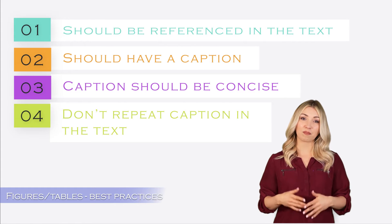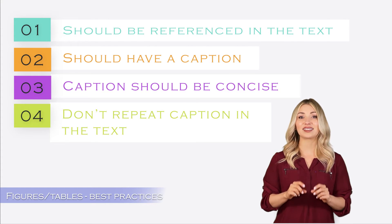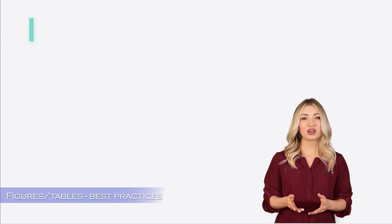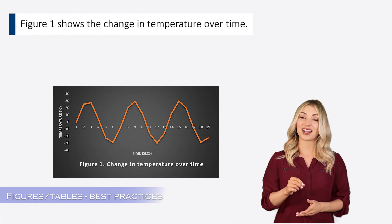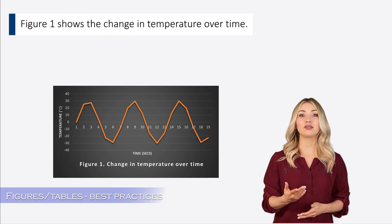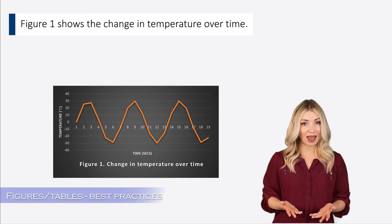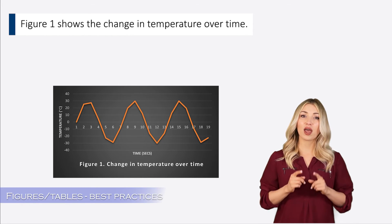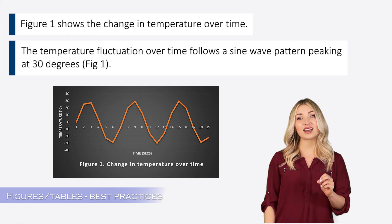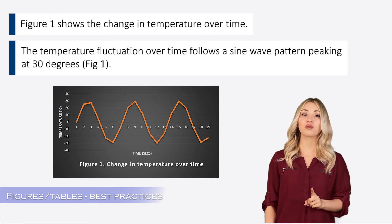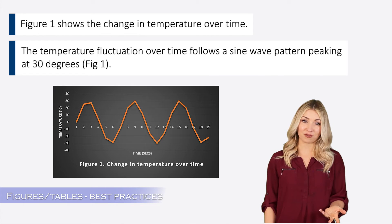Another common mistake made by both beginner writers and experienced writers is repeating the figure caption in the text when referring to the figure in the paper. Look at this example. The author repeats exactly what it says in the figure caption in the text. The author is saying that the figure shows the change in temperature over time. This is already mentioned in the figure caption. There is nothing new here. Now look at the second example. While referring to the figure, the author provides some additional information to the readers by talking about an interesting trend in the figure instead of just repeating the figure caption.